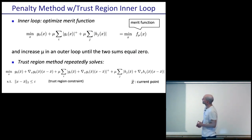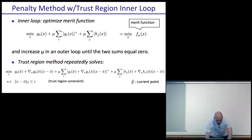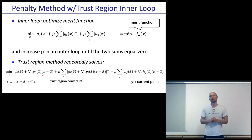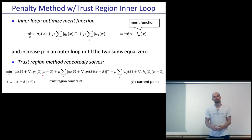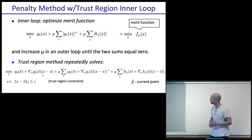Inside the trust region, we solve a problem that approximates the objective with a linear approximation and approximates what's inside the penalty terms with their local linear approximation. By doing that, we get something called a convex problem. Convex problems can be solved very efficiently, so this trust region local problem is often solved with a convex optimization solver, unless the dimensions don't allow it.